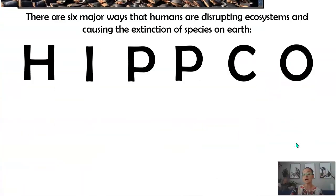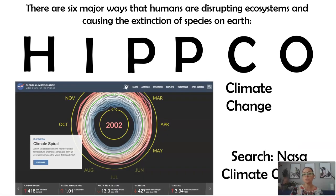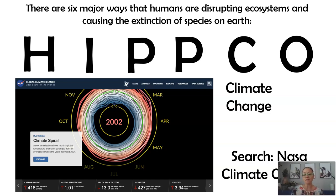Climate change is also having an impact on our ecosystems. When you really think about what climate change is, it's a warming of our atmosphere, our oceans, our land. Temperature is an abiotic factor affecting life on Earth.